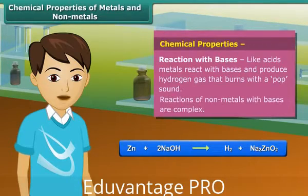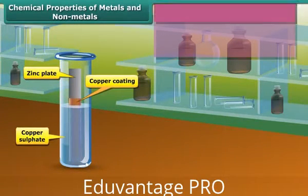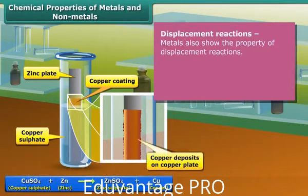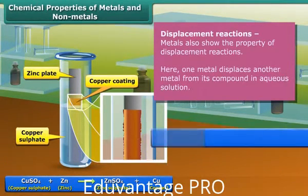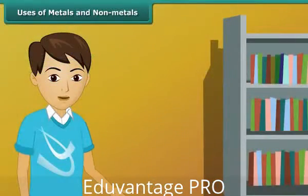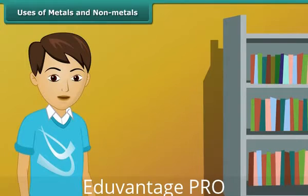Non-metals react with bases completely. Besides these chemical reactions, metals also show the property of displacement reactions. In a displacement reaction, one metal displaces another metal from its compound. Till now we have learned about the physical and chemical properties of metals and non-metals. Now let's move on to another important topic — the uses of metals and non-metals.